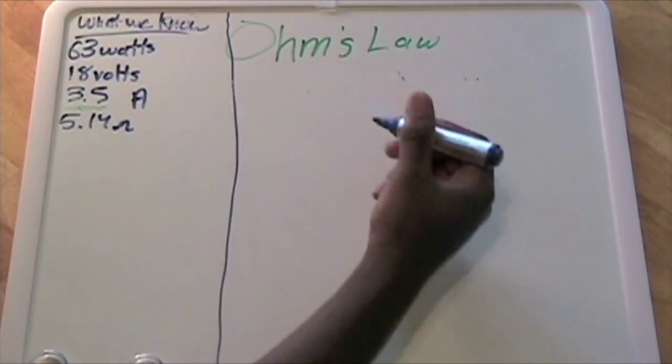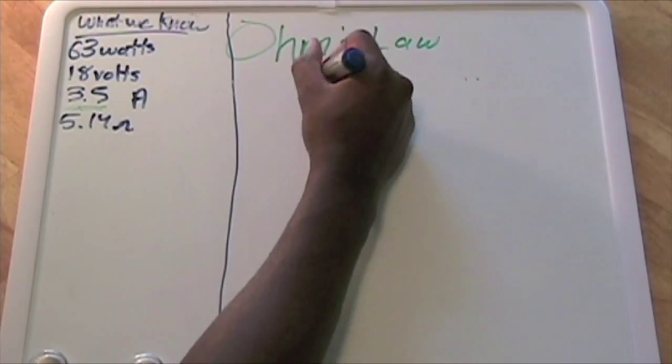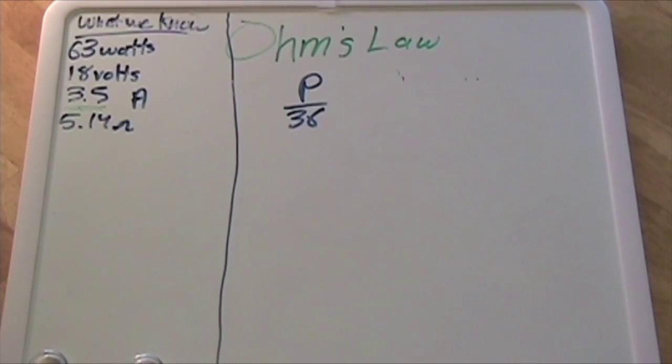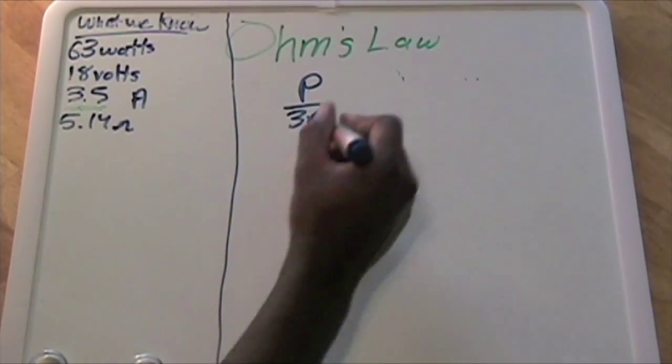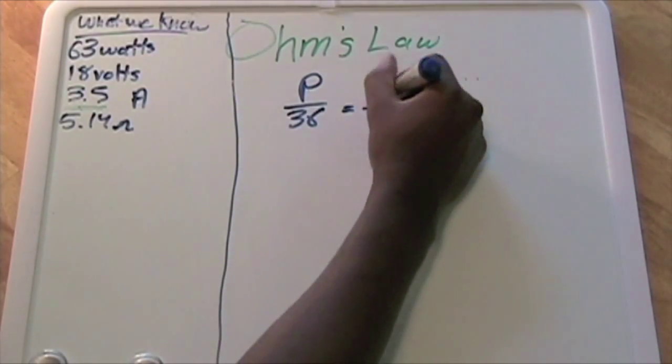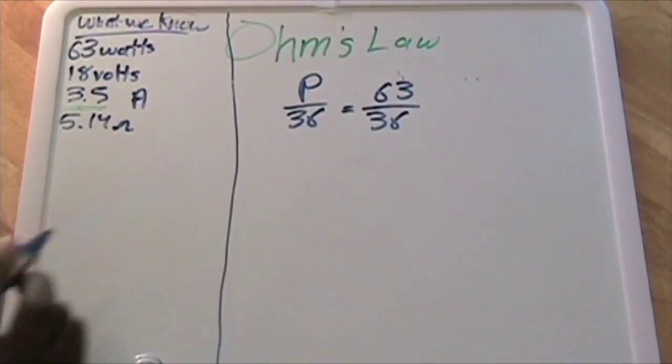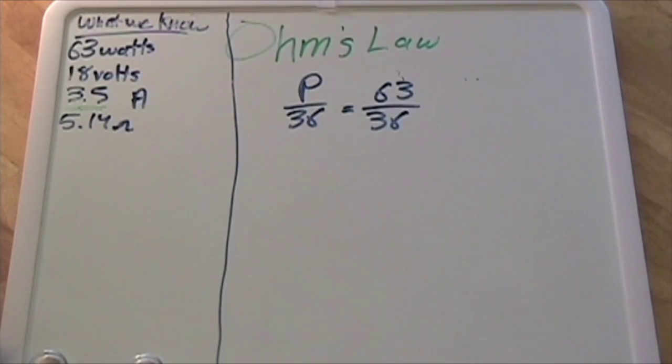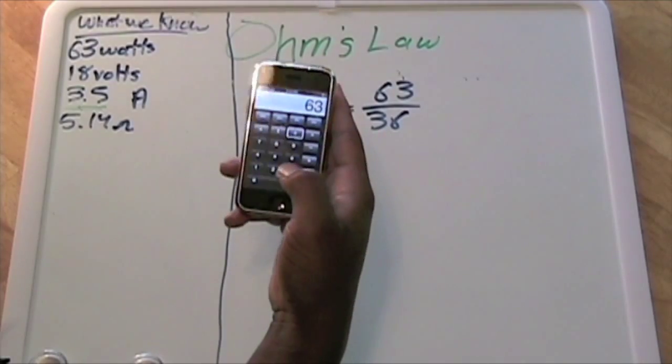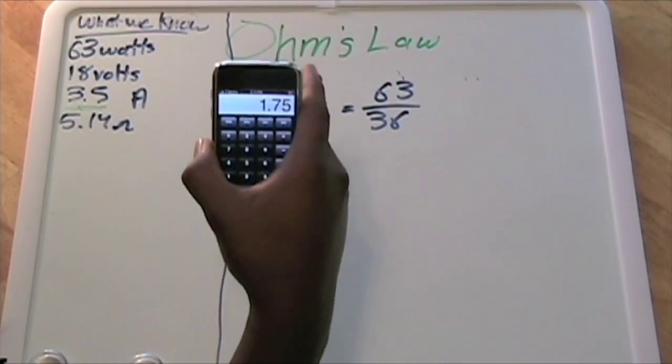Let's start with the watts. It'll be P divided by 36. Plugging in our values, we'll have 63 divided by 36. Plugging that into your calculator, 63 divided by 36 is 1.75 watts per solar cell.